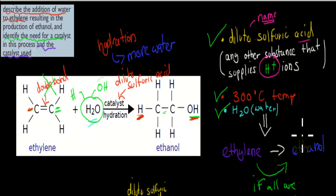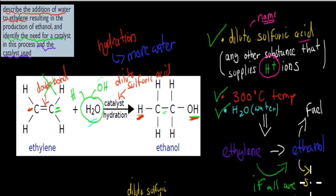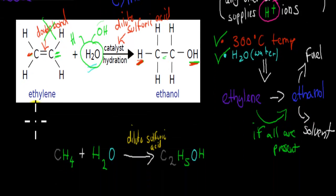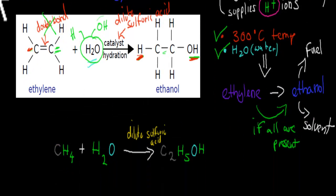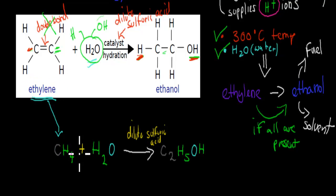Some of the reasons why we might want to make ethanol are that we can use ethanol as a fuel and also as a solvent. The reasons why it's a good solvent will be discussed in the next video. Now let's quickly go over the chemical formula. Ethylene is C₂H₄ and that is a gas.